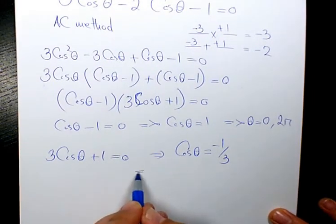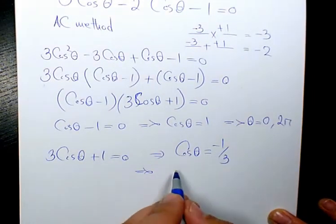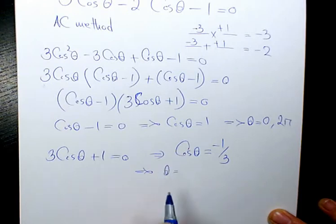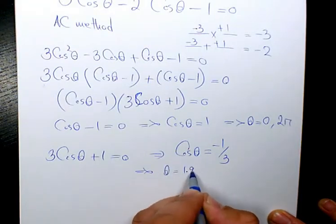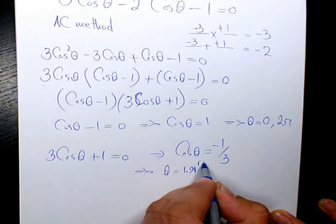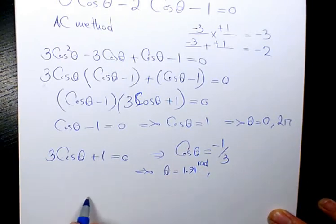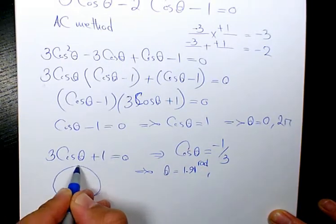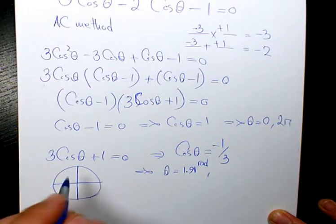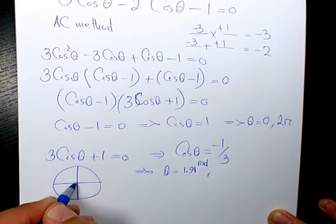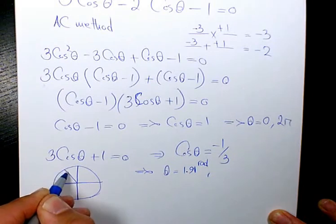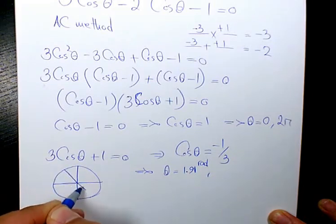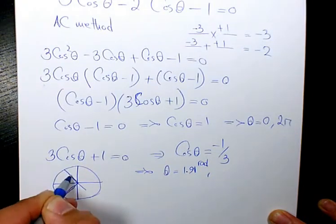What are the answers for here? Cosine theta equals negative 1 over 3. If you put it in the calculator, you're going to get 1.91 radian. That's based on the CAST rule. We can say that cosine is negative in quadrant 2 and also quadrant 3.